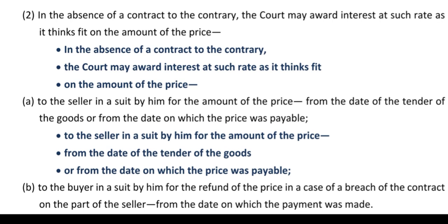Subsection 2: in the absence of contract to the contrary, the court may award interest at such rate as it thinks fit on the amount of the price. अगर parties ने कोई mutually contrary contract नहीं बनाया है, तो section के provisions लागू होंगे। Court जो भी price amount पर interest देना उचित समझे — जैसे 6% per annum या 12% per annum — वैसे order कर सकता है।